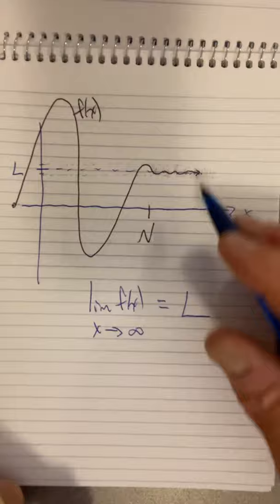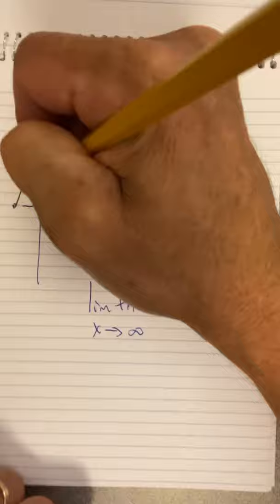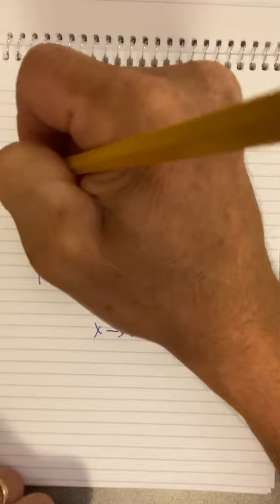Now, the definition says that there's some point, no matter how small an epsilon, let's choose this epsilon, this distance here. That's just epsilon right there. And of course, you could go above or below. So I've marked epsilon in both directions.